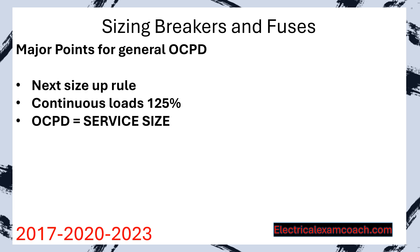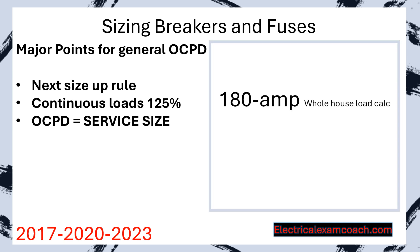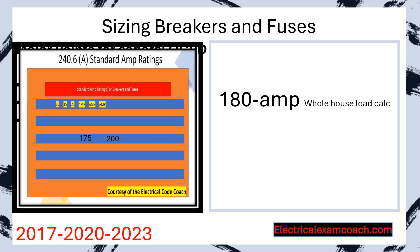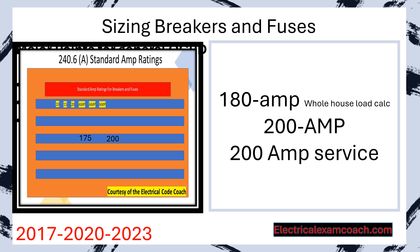Our final major point is that the overcurrent protective device size equals the service size. Let's imagine we did a whole house load calculation and it equaled 180 amps. We have to size the main breaker — we head to Table 240.6A and choose the next standard size, which is 200. The service size is based off the size of the main breaker or main fuse for that structure, so this would in fact be a 200 amp service. The load calculation dictated what size breaker we used, and the breaker size dictated the size of the service — this is very important as we get farther into the program.